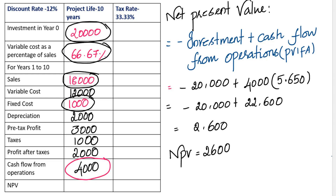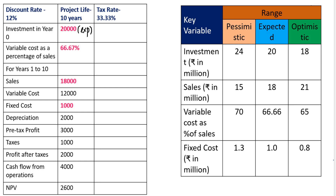Now let's change the investment to a pessimistic scenario and see what happens. We will use the pessimistic investment figure but retain sales, variable cost, and fixed cost from the expected scenario. This is because we want to vary only the investment and observe its impact on the net present value. The variable we are changing is denoted in blue color.